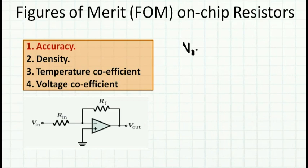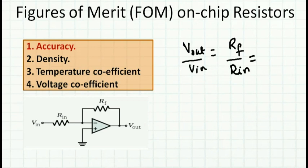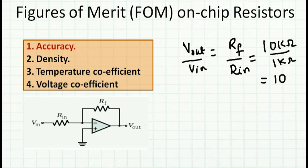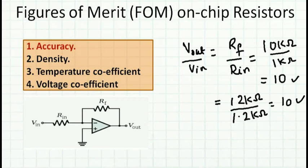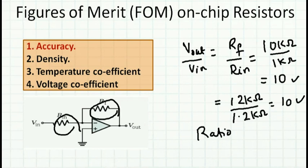Consider an amplifier where the gain is given by Vout/Vin = Rf/Rin. Assume Rf is 10 kilo ohms and Rin is 1 kilo ohm, giving a gain of 10. If these are poly resistors with 20% variation, Rf becomes 12 kilo ohms and Rin becomes 1.2 kilo ohms — the gain still remains 10. By taking the ratio of resistors, we eliminate the variation error. This is why matching Rf and Rin is very important to get the proper gain.